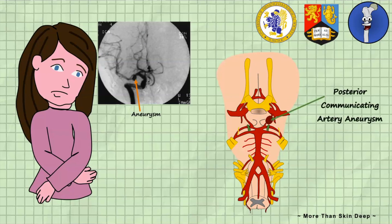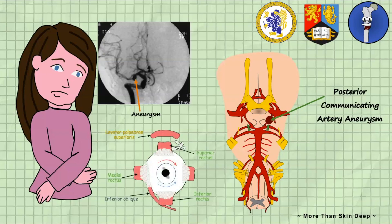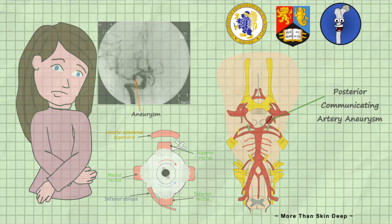This aneurysm is causing compression of Anna's left oculomotor nerve at the brainstem and subsequent paralysis of important extraocular muscles of the eye.